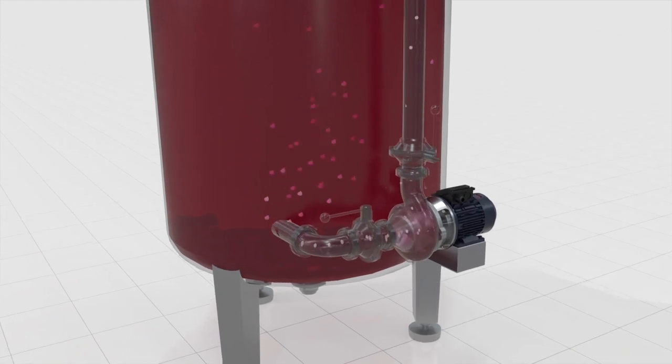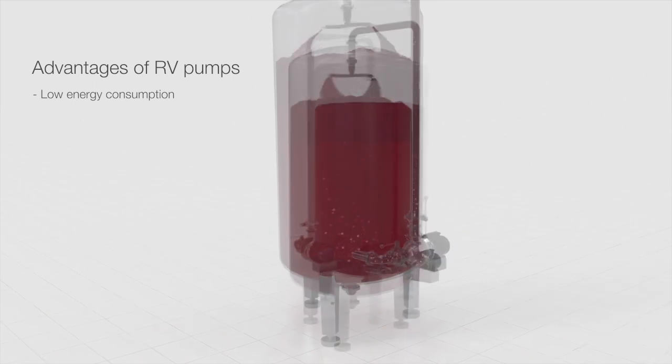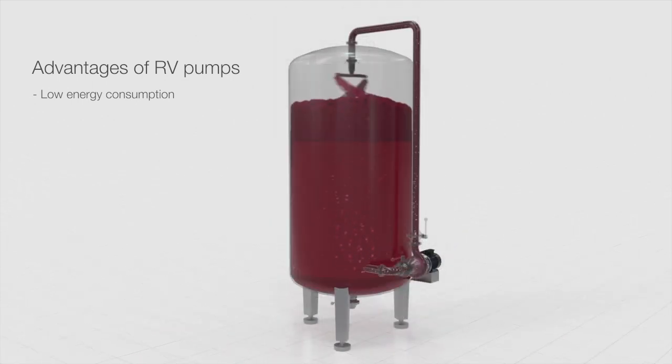Advantages of RV pumps are low energy consumption thanks to their high performance, less than 70%. This means a lower increase in the temperature of the pumped wine. Minimal damage to solids: skins, seeds, pulp. The helicoidal impeller and the precise internal clearances guarantee minimum recirculation inside the pump and let solids through without damaging their structure.